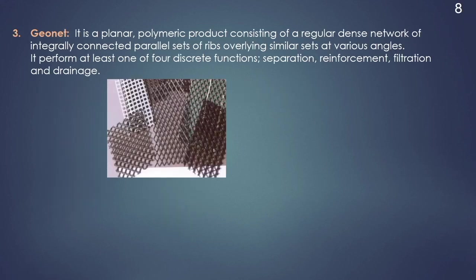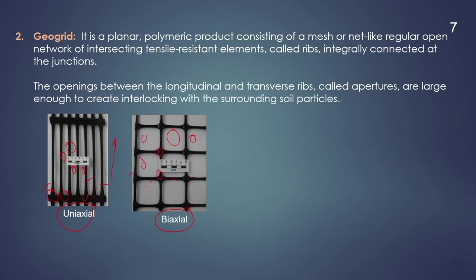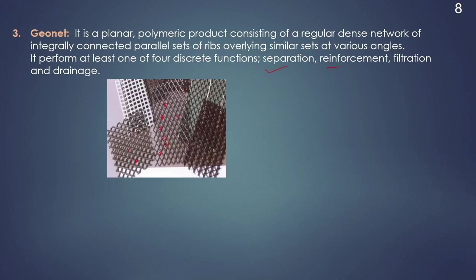Next is the geonet. Geonet is also a planar polymeric product consisting of a regular dense network of integrally connected parallel sets of ribs overlying similar sets at various angles. It performs one of four discrete functions: separation, reinforcement, filtration, and drainage. These are the apertures of geonet. If we compare geonet to geogrid, the aperture sizes of geogrid are quite large in comparison to geonet. So, geonet is a dense network of ribs.